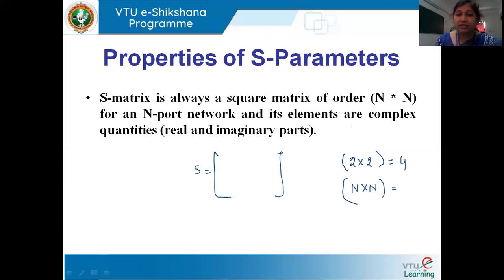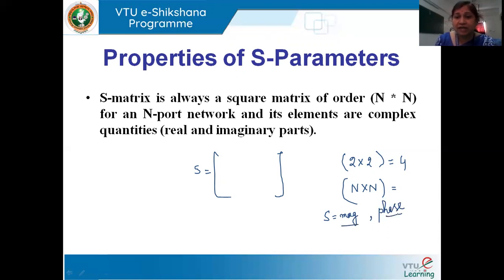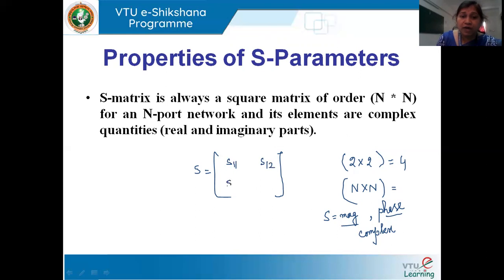Each element of the S matrix is a complex quantity. When we consider any S parameter individually, it is associated with both magnitude and phase. When any parameter is associated with magnitude as well as phase, we call it a complex quantity. For a two-port network, the S matrix gives us a 2×2 matrix: S11, S12, S21, and S22 — where the first index shows the row and the second shows the column. So we have four elements in this square matrix, and each element has a real part as well as an imaginary part.